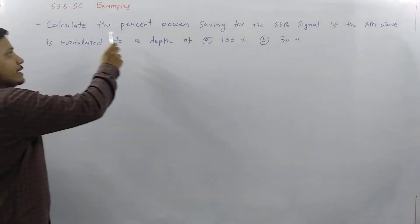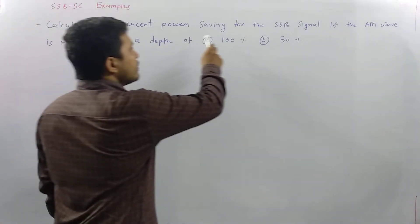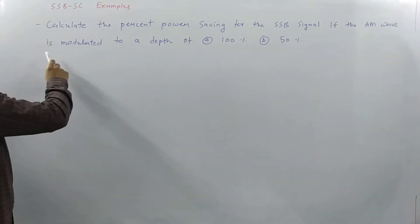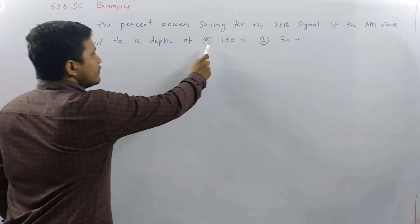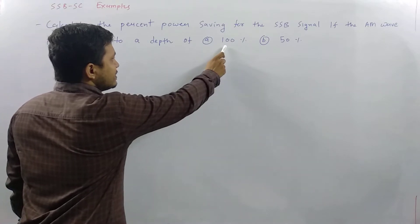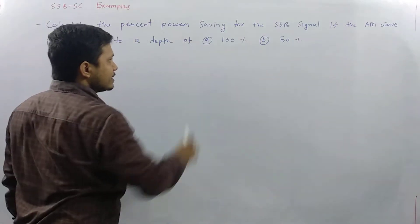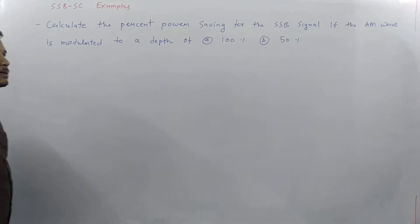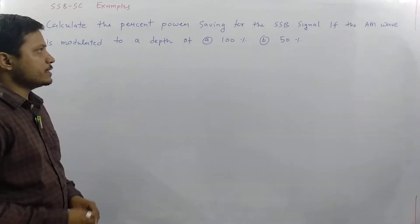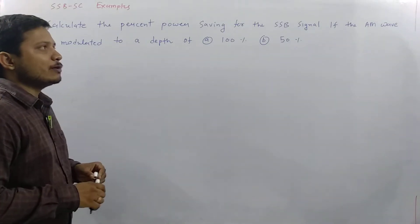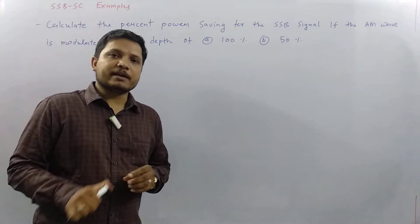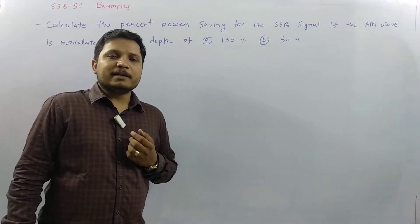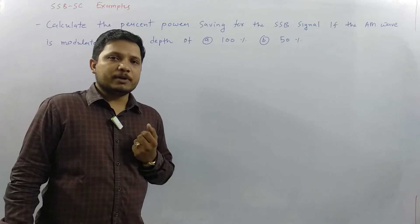The problem is: calculate the percent power saving for an SSBSC signal if the AM wave is modulated — first case with modulating index 100%, and in the second case with modulating index 50%. We are dealing with calculating percentage power saving in SSBSC signal with respect to the AM signal.